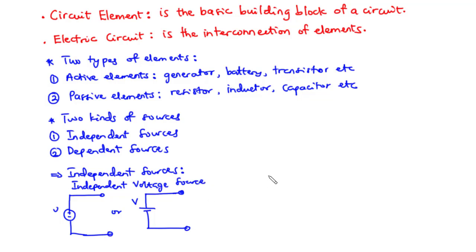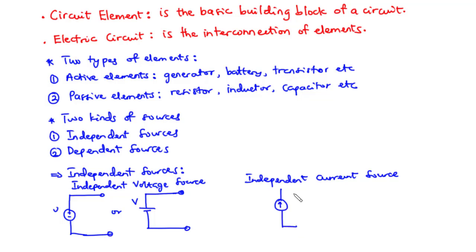And then for the independent current source, we have a circle with an arrow inside. The arrow basically indicates the direction of the current. So this is an independent current source — sources which provide a specific voltage or current that is completely independent and does not depend on any other circuit element.